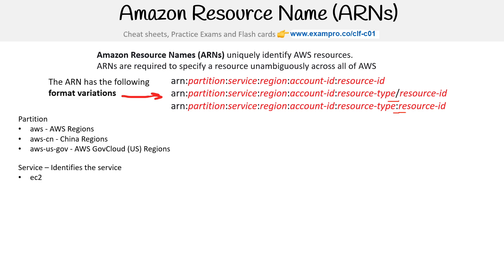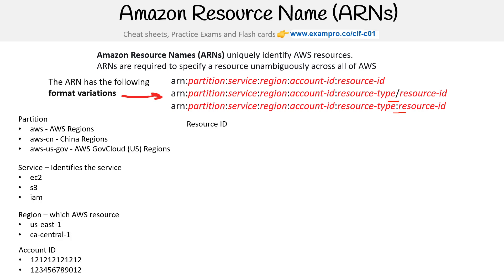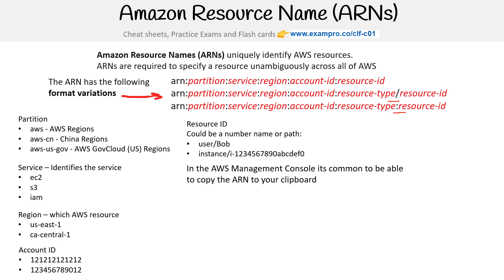Then there's the service identifier — EC2, S3, IAM — pretty much every service has its own service name identified here. The region would be something like us-east-1 or ca-central-1. You'd have the account ID, which would be 12 digits. The resource ID could be a name or a path, so for IAM users we'd have something like user/Bob, or this could be an EC2 instance ID.